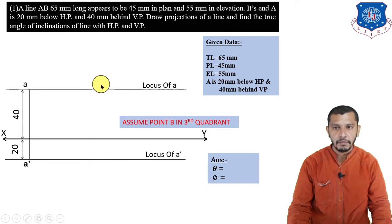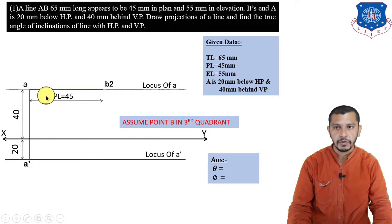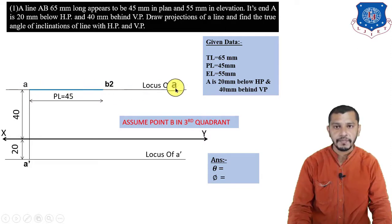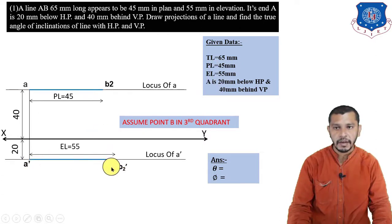Since locus of B is unknown, we mark B2 on the locus of A: measure plan length 45mm and mark B2 on the locus of A. This length is the plan but not the actual plan of line AB. Similarly, mark the elevation length on the locus of A-dash: measure 55mm from A-dash to get B2-dash. Now we have B2 and B2-dash.